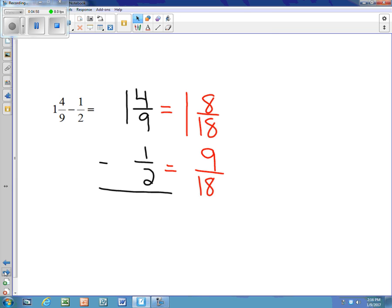We cannot do 8 minus 9, so we have to borrow and make this a 0. Since my denominator is 18, I'm adding 18 plus 8, and I have 26. 26 minus 9 gets me to 17/18.